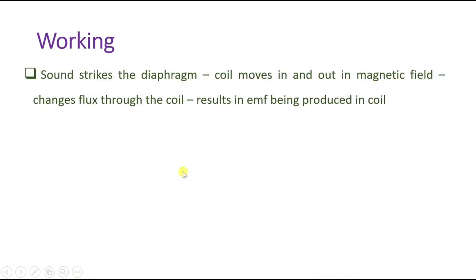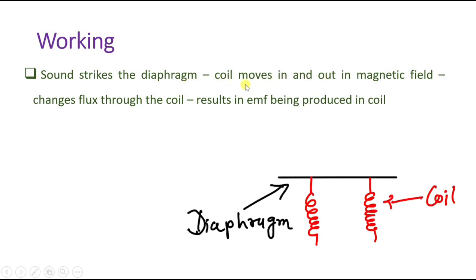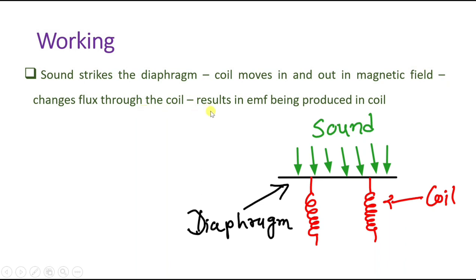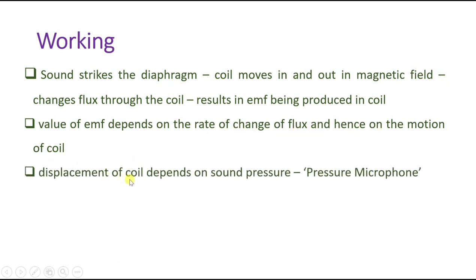When sound strikes on the diaphragm there will be a motion of the coil. That motion of the coil in and out in the magnetic field will change the flux through the coil. That change in flux will generate EMF, and the value of EMF depends on the change in flux. Since displacement of the coil happens because of sound pressure, it is even referred to as a pressure microphone.